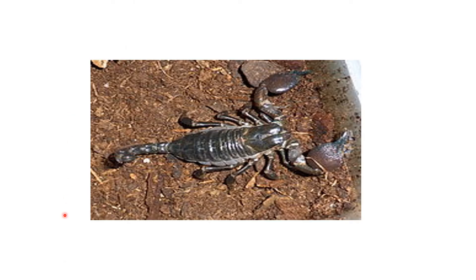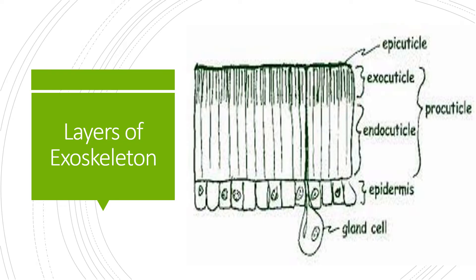To understand the process of molting properly, you first have to understand what the exoskeleton is. In the diagram you can see a crab, and you know that crabs have hard layers outside their body. These hard layers help in protection from predators. Mostly, arthropods in their immature stages are vulnerable to predators, so they have a special type of hard skeleton outside their body to protect them. Because this skeleton is hard and present outside the body, it is called exoskeleton.